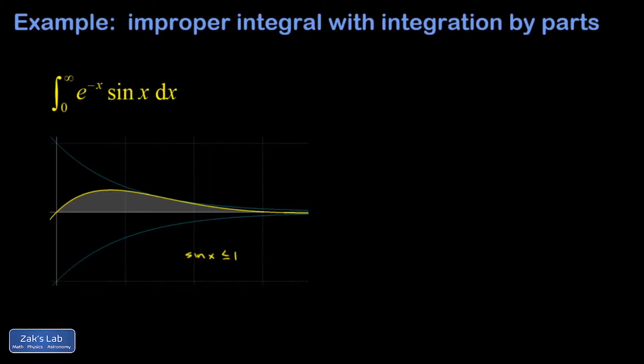So my function e^(-x) sin x must always be less than or equal to what I get when I put in the max value of the sine function. So that forms an upper bound on the curve, and that's what this is right here: e^(-x).